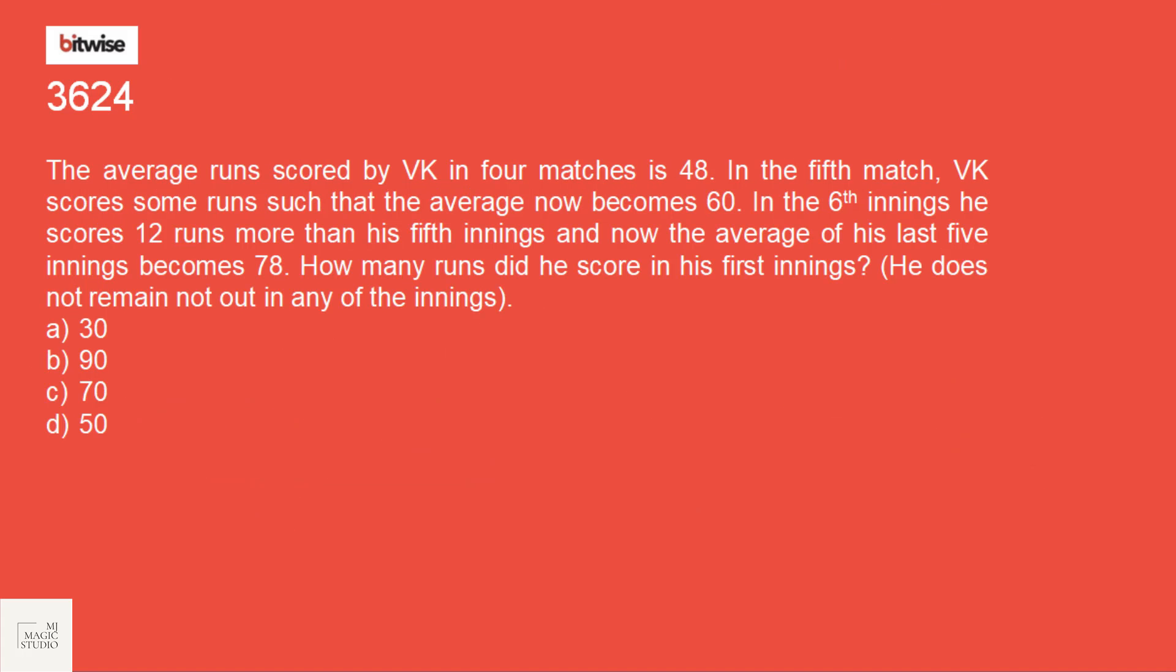Okay, a sample question from averages. The average run scored by VK in 4 matches is 48. 48 into 4 is 192. These are the scores of 4 matches. 192 is the total score. In the 5th match, VK scores some runs. Suppose X runs. Such that the average now becomes 60. So 60 into 5 is 300. That means in the 5th match, run scores are 300 minus 192. That is 108.